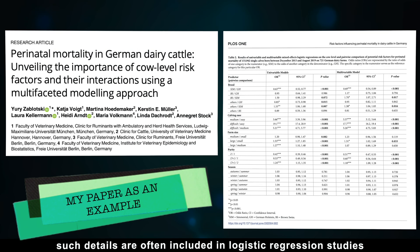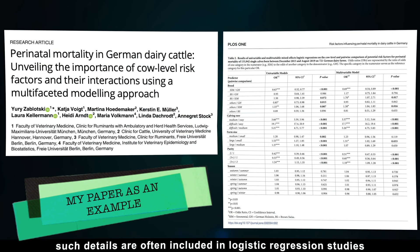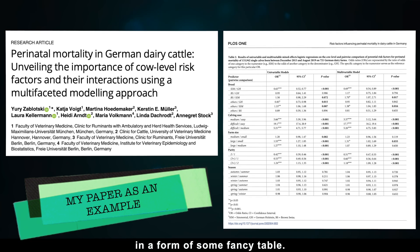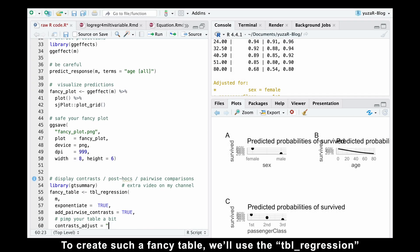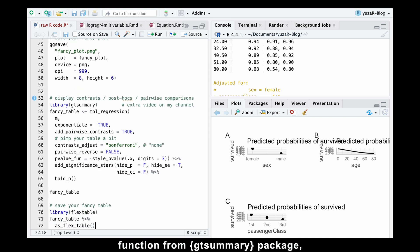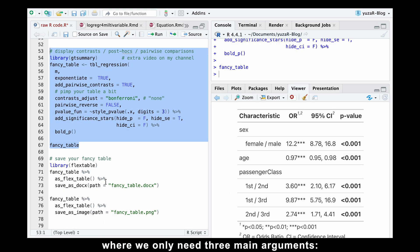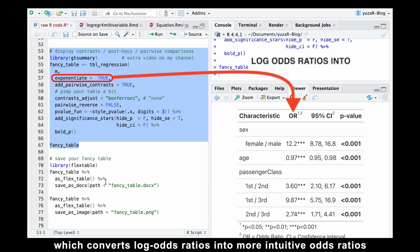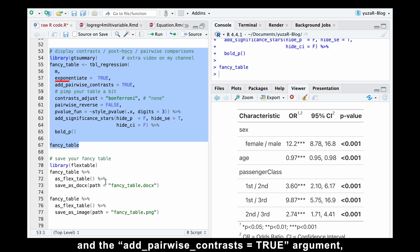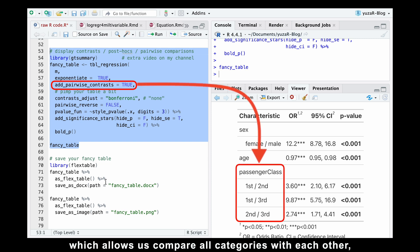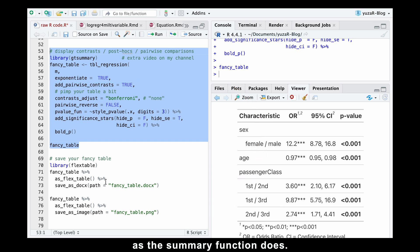Typically, such details are often included in logistic regression studies in the form of some fancy table. To create such a fancy table, we'll use the tbl_regression function from the gtsummary package, where we only need three main arguments. The model name, the exponentiate equals true argument, which converts log odds ratios into more intuitive odds ratios, and the add_pairwise_contrasts equals true argument, which allows us to compare all categories with each other rather than just against a reference category, as the summary function does.